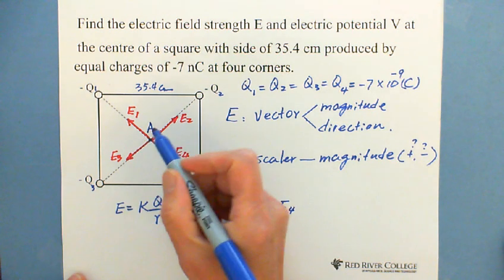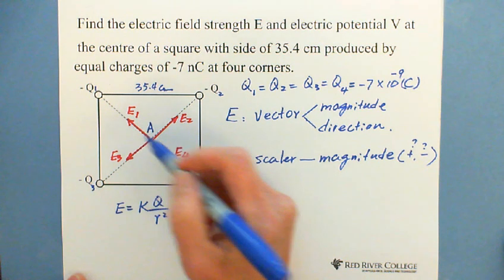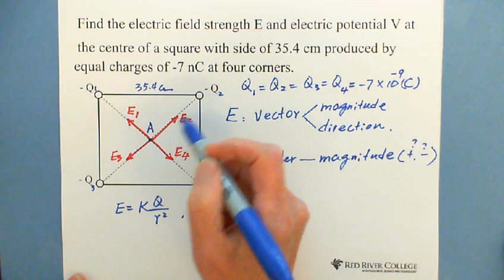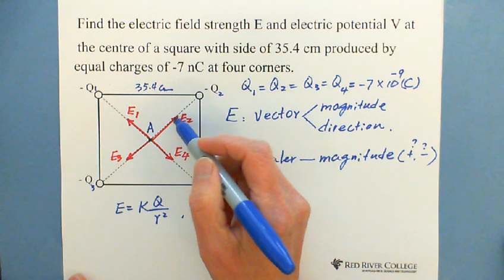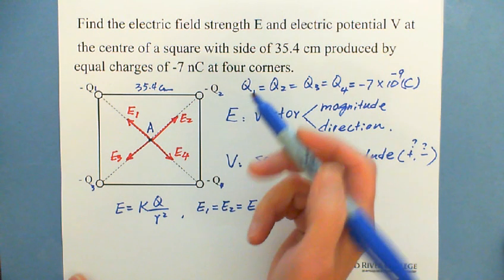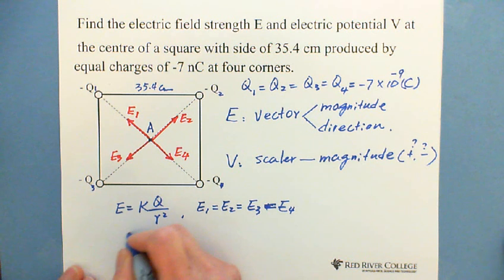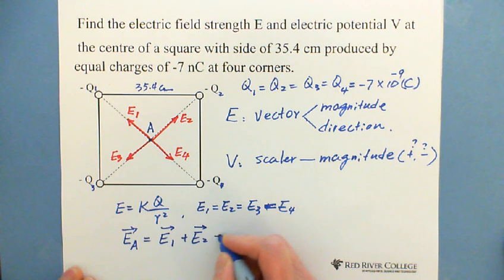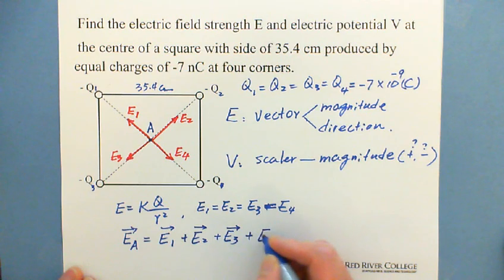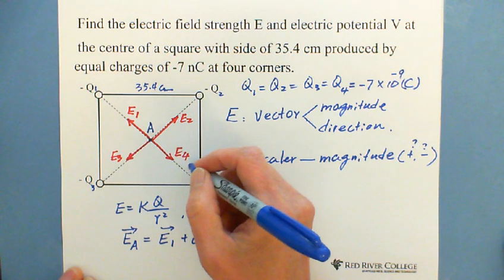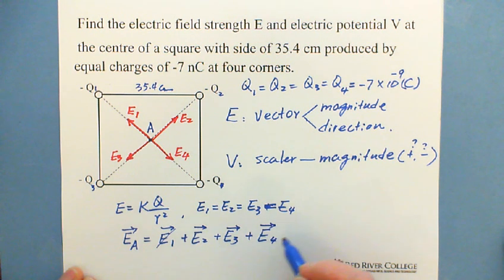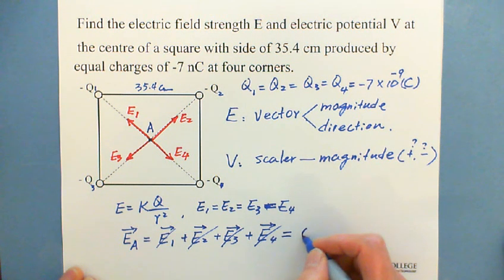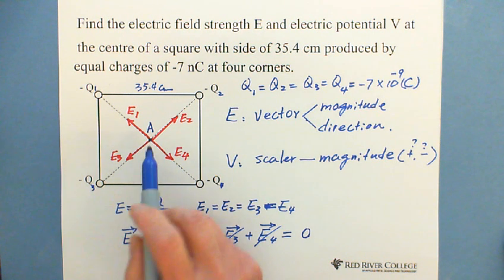Looking at the directions: E1 and E4 have opposite directions, so as vectors these two cancel each other out. E2 and E3 also have the same magnitude and opposite direction, so these two also cancel out. As a result, the total electric field at point A — EA equals E1 plus E2 plus E3 plus E4 — equals zero.